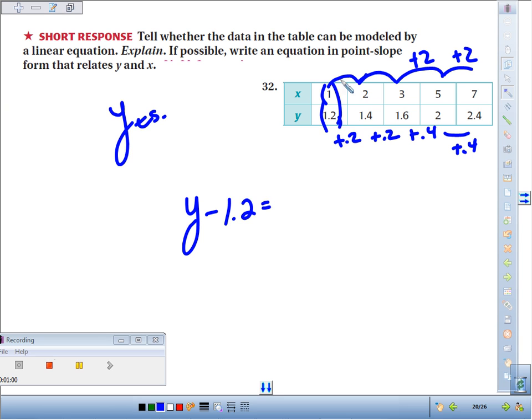equals the slope. Slope is how much does y go up or down by every time x increases by 1, and we can see it was going up by 0.2 every time. So our slope is 0.2 times x minus the x-coordinate is 1.